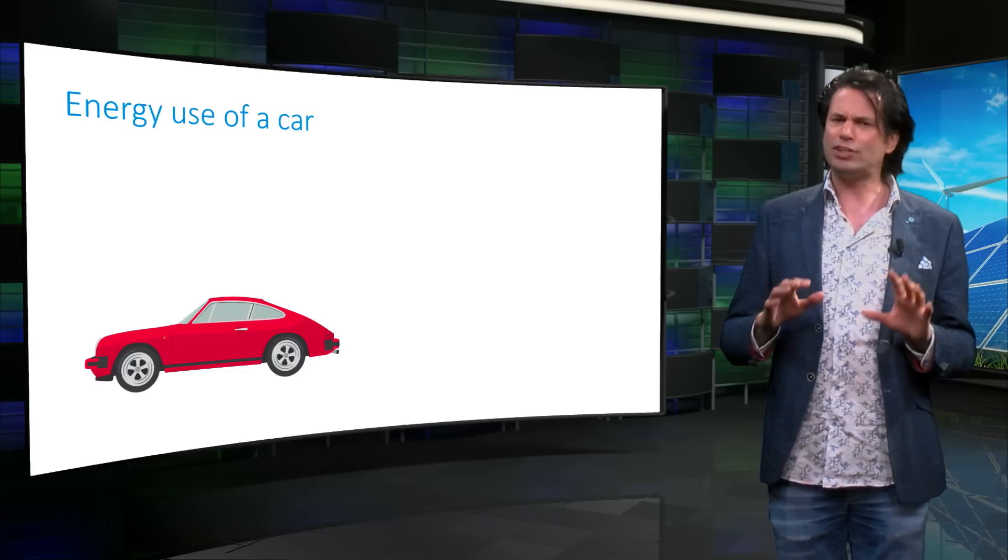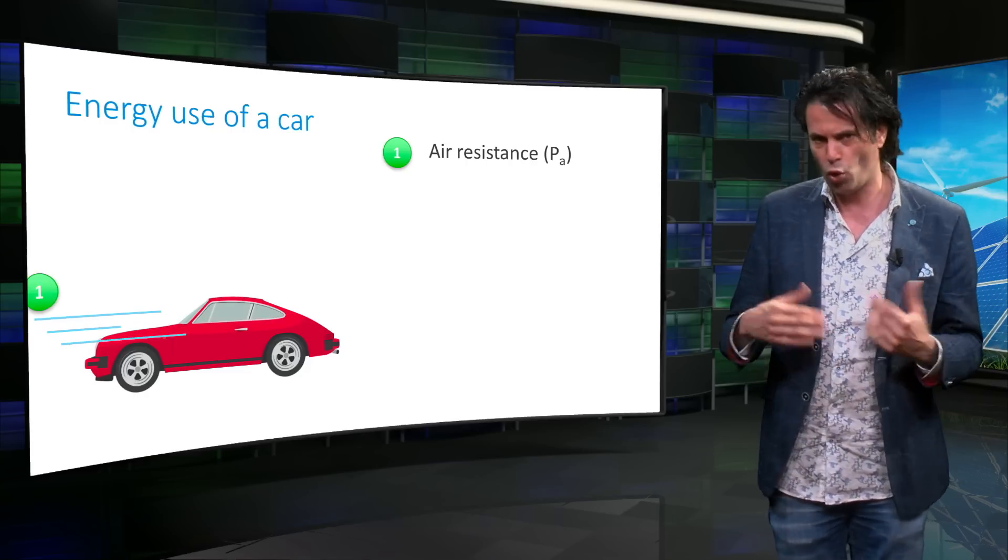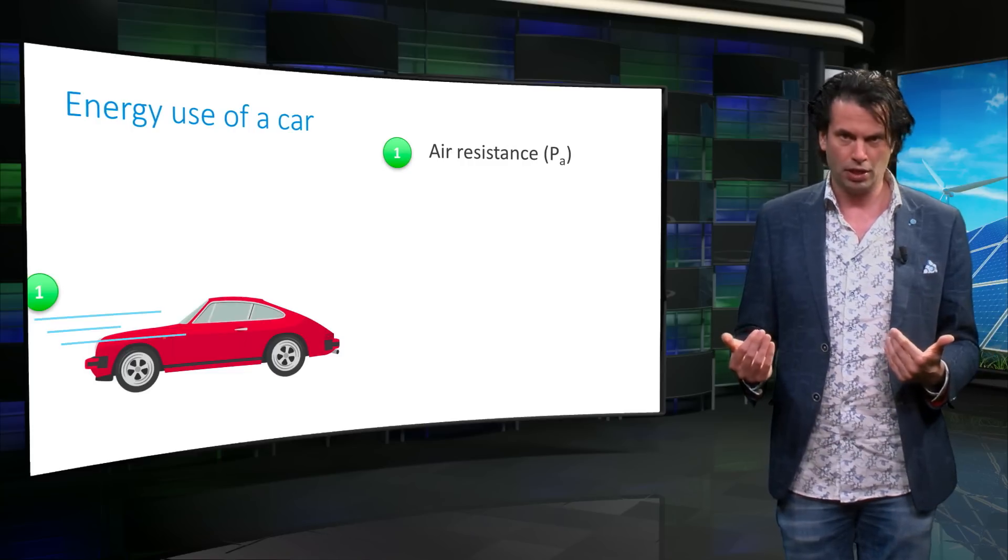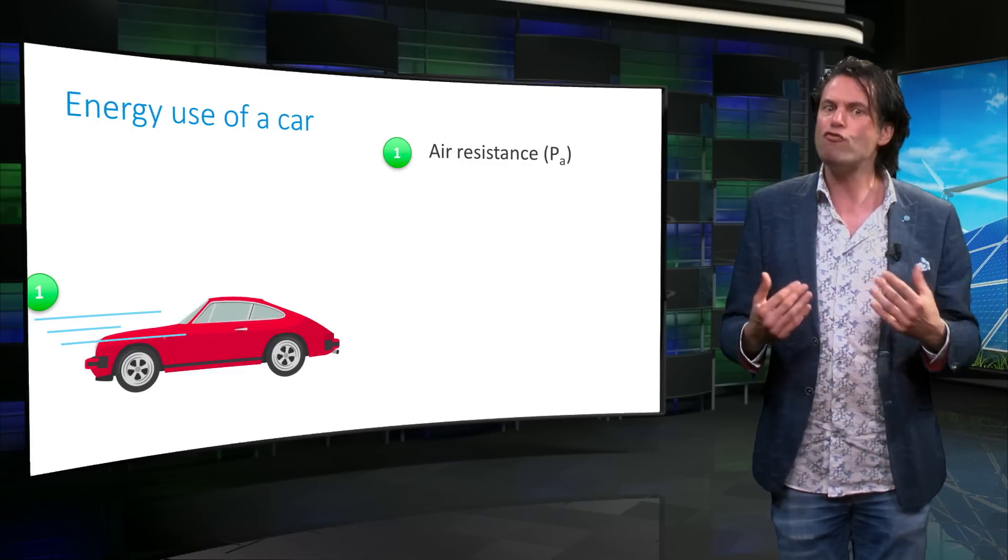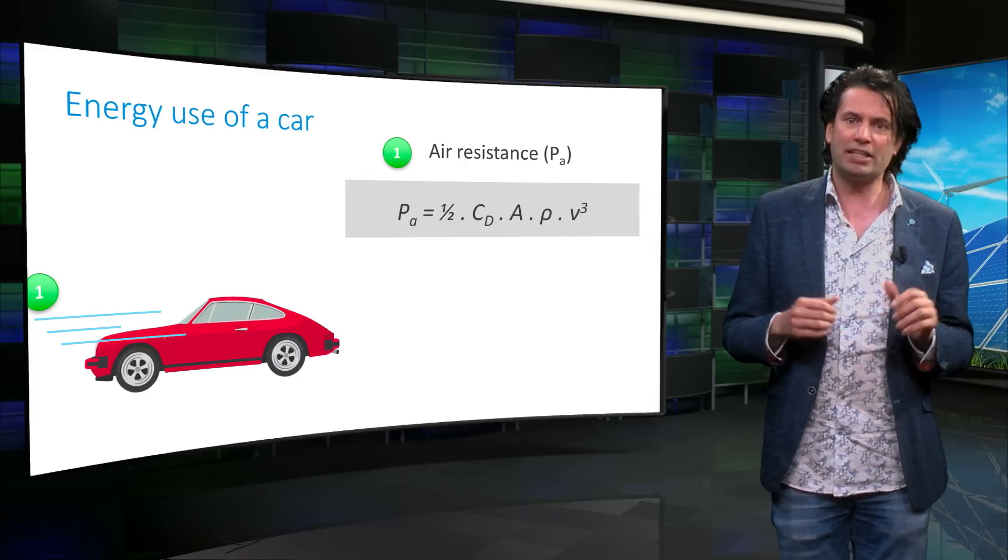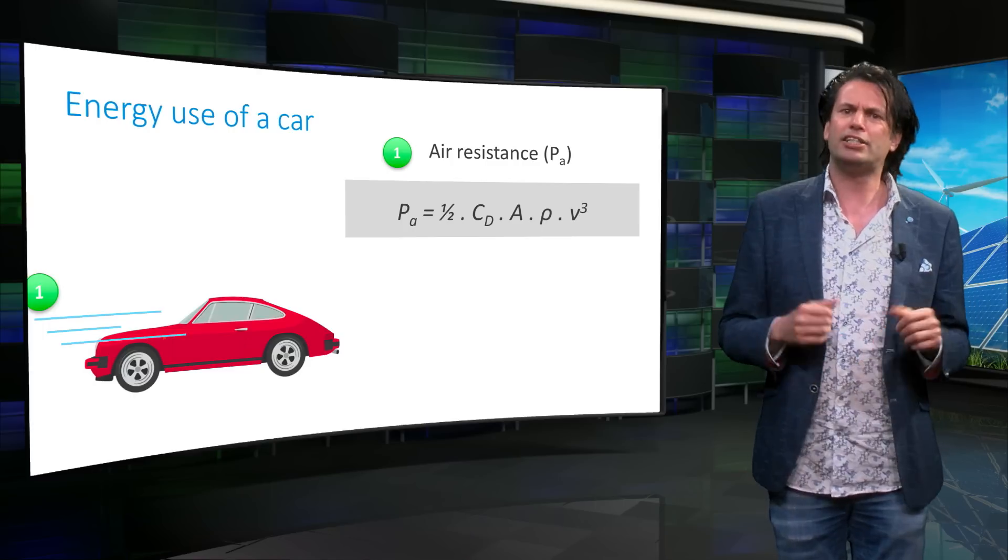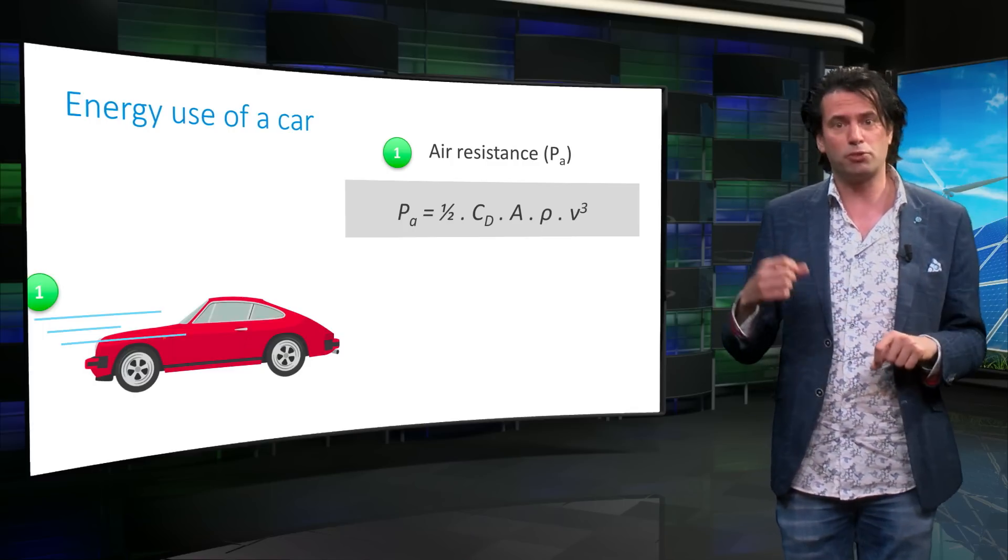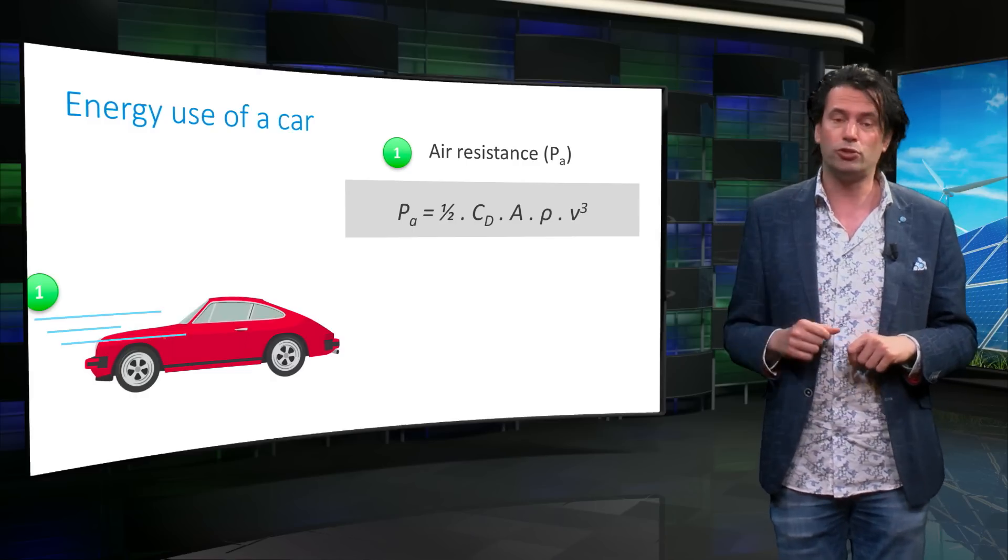Any moving object has to overcome air resistance, which always acts against the direction of motion. The power required to overcome air resistance is expressed as Pa. Mathematically, Pa is equal to half times the Cd times A times rho times V to the power 3.